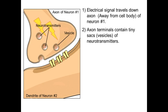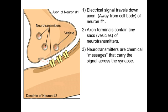The electrical signal comes down and causes these neurotransmitters to be released from vesicles — little sacks or bubbles that contain this substance. These neurotransmitters are specialized chemicals released into this gap and just diffuse on their own, spreading out across into the synapse. The synapse is a watery liquid between all of our cells. The neurotransmitters diffuse across this gap towards the dendrite of neuron number two.